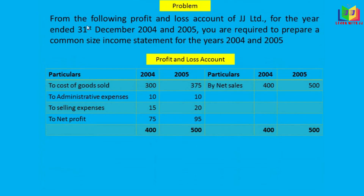Let's start doing the problem. From the following profit and loss account of JJ Limited for the years ended 31st December 2004 and 2005, we are required to prepare a common size income statement. Using this profit and loss account, we have to find out the net profit.